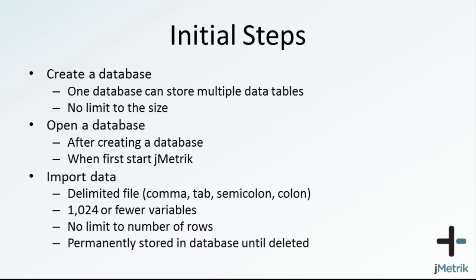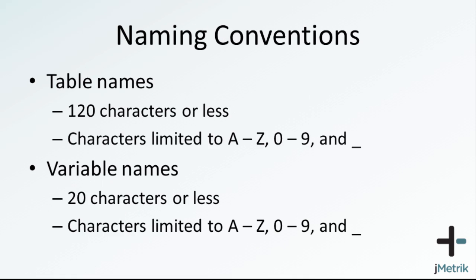Data are permanently stored in the database until you manually delete the table. When creating your data file and importing it into JMetric, you must follow certain naming conventions. Table names are limited to 120 characters, and variable names are limited to 20 characters. Both table names and variable names can only use the characters A through Z, 0 through 9, and the underscore character.